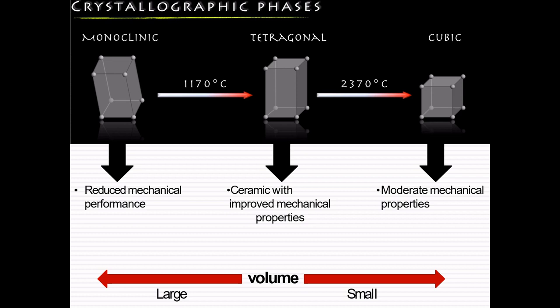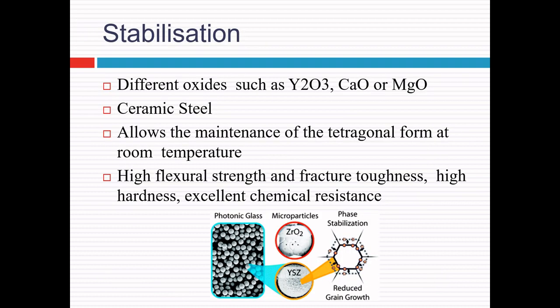In stabilization, we add different oxides like yttrium oxide, calcium or magnesium oxide, which prevents the polymorphic transformation. When these oxides are added to zirconia, it allows the tetragonal phase to exist at room temperature, resulting in ceramics with exceptional properties like high flexural strength, fracture toughness, high hardness and excellent chemical resistance. Because of these excellent properties, the yttrium stabilized zirconia ceramic is sometimes referred to as ceramic steel.